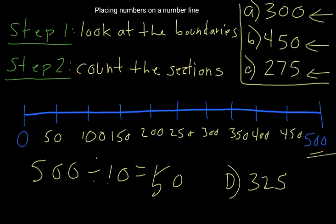You should have stopped the video and tried to work out where these different numbers go. We've got 300, so A... well, we've already worked out and identified where 300 should go. So 300 should go there, because we worked out that each of these steps was worth 50.